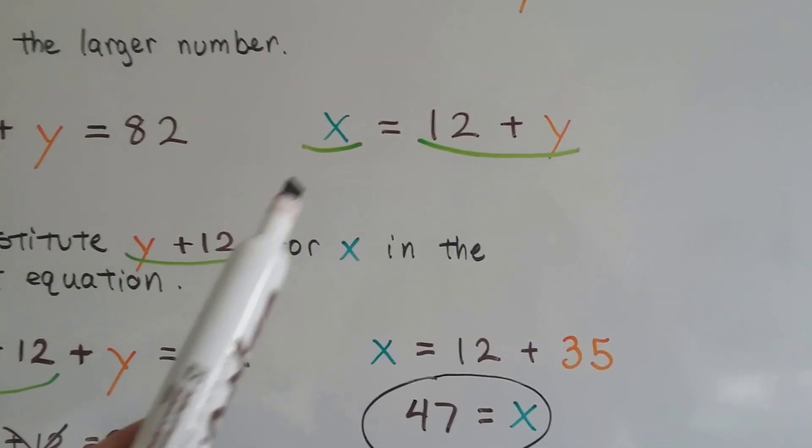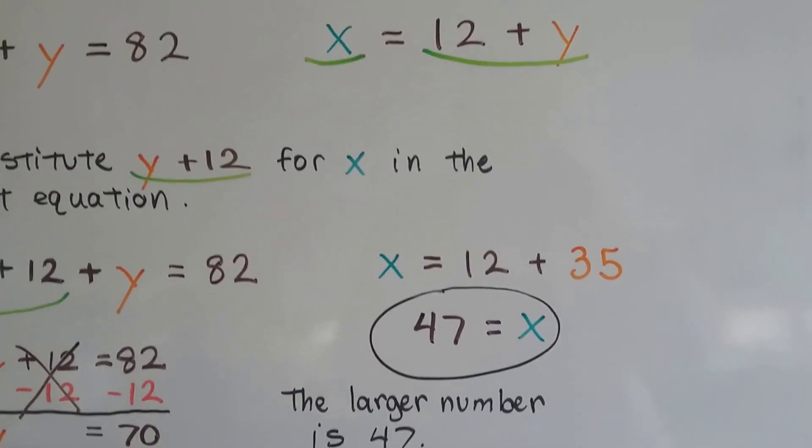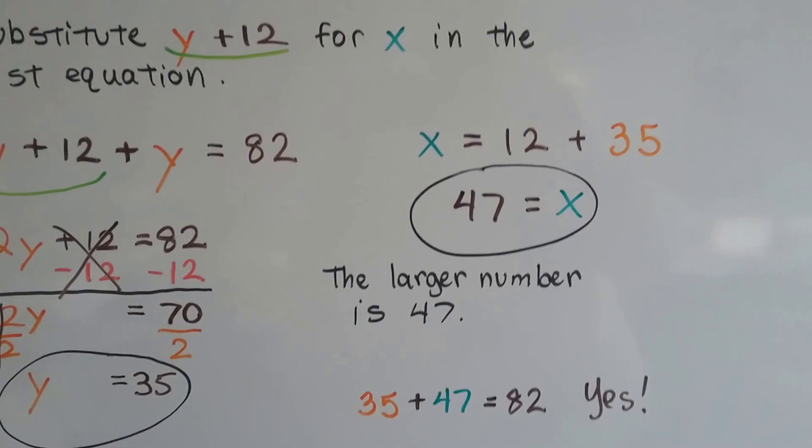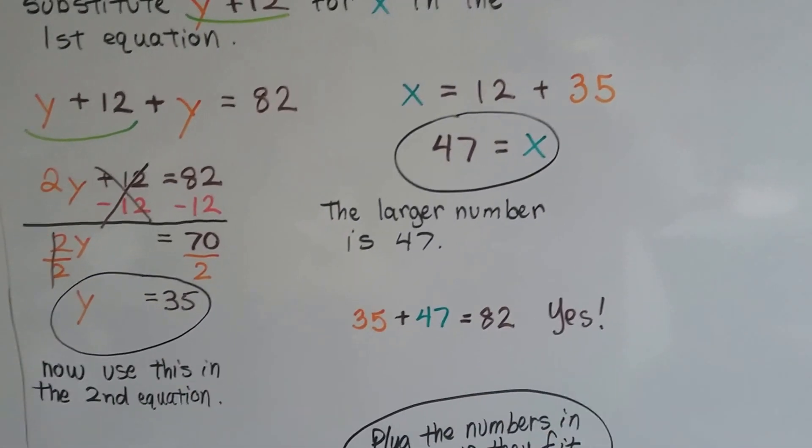So we had x equals 12 plus y. So x equals 12 plus 35. So x is equal to 47. The larger number is 47. 35 plus 47 is 82. Yes, it works.